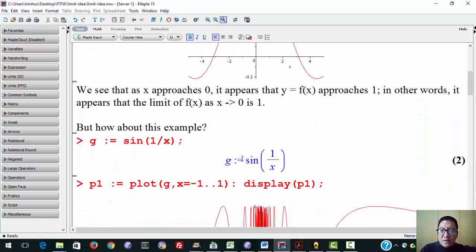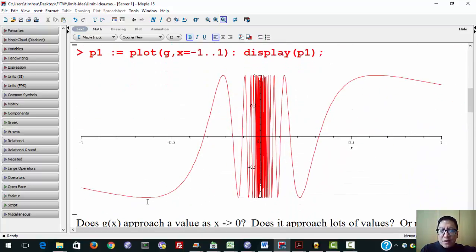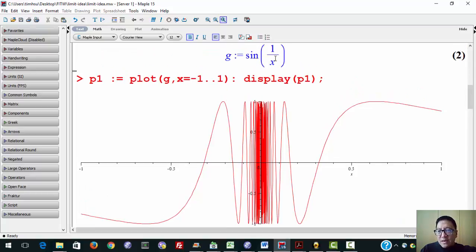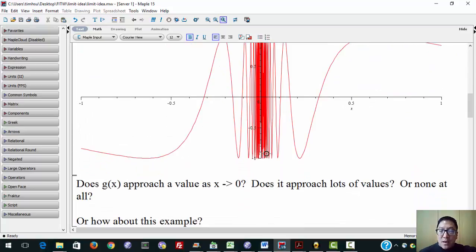But how about this example? This is a very famous one, g(x) equals the sine of 1 over x, also not defined at x equals 0. When we graph that thing, it gets super wiggly. And if you think about it, as x approaches 0 and is positive, 1 over x goes to infinity, positive infinity, and so you get this infinitely oscillating wiggle as x approaches 0. So the question is, if we're going to define what a limit is correctly, does g(x) approach some value as x approaches 0? Does it approach lots of values? Does it approach none of them?